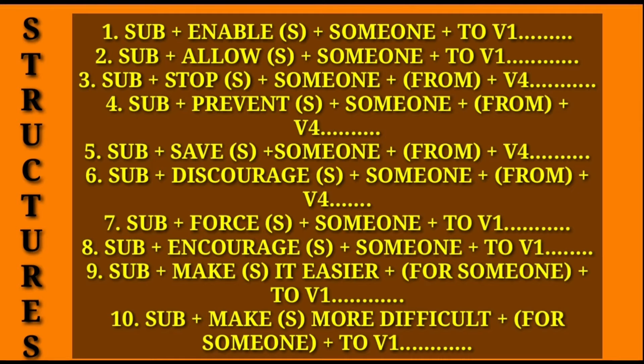The word 'from' in structure 3 is optional — it's up to you whether you use 'from' or not. Number 4 — Subject + prevent/prevents + someone + from + V-ing + remaining part. Number 5 — Subject + save/saves + someone + from + V-ing + remaining part. Number 6 — Subject + discourage/discourages + someone + from + V-ing + remaining part. Number 7 — Subject + force/forces + someone + to-V1 + remaining part. Number 8 — Subject + encourage/encourages + someone + to-V1 + remaining part.